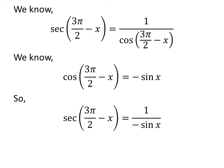Let us apply the above identity in the expression of secant of 3 pi over 2 minus x. So secant of 3 pi over 2 minus x equals 1 over negative sine of x.